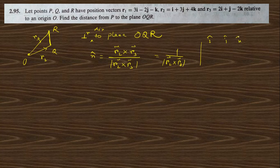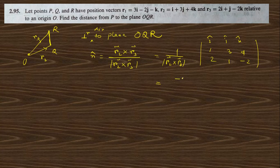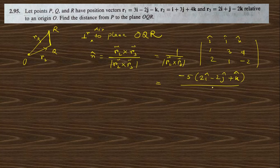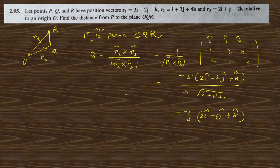To find r2 cross r3: r2 = (1, 3, 4) and r3 = (2, 1, −2). Computing the determinant gives −10i + 10j − 5k. Factoring out −5 gives −5(2i − 2j + k). The magnitude is 5·√(4 + 4 + 1) = 5·3 = 15, so the unit vector is (1/3)(2i − 2j + k).